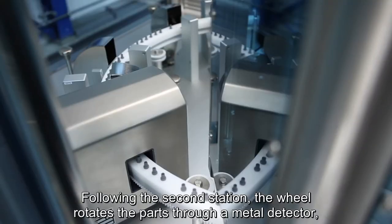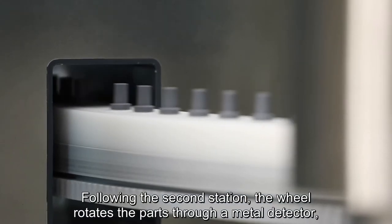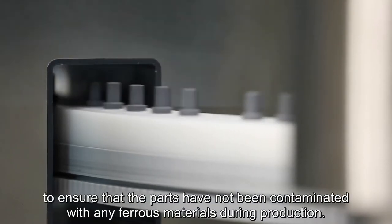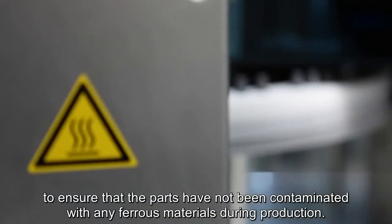Following the second station, the wheel rotates the parts through a metal detector to ensure that parts have not been contaminated with any ferrous materials during production.